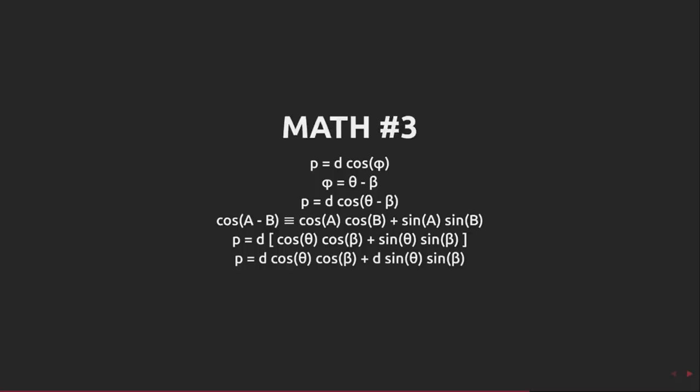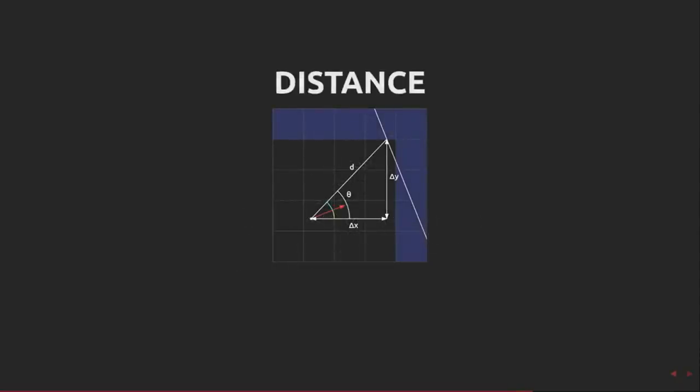Taking a look once more at this diagram, we see that we know theta, capital delta x and capital delta y. We also know that there's a relationship between these thanks to our sine and cosine knowledge. Capital delta x is d cos theta and capital delta y is d sin theta.